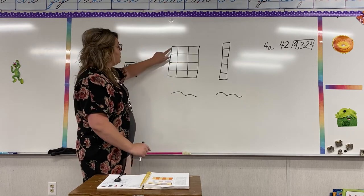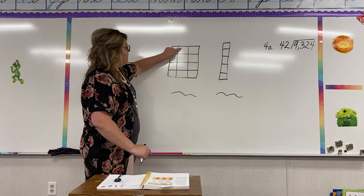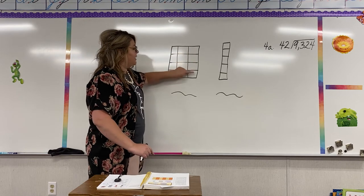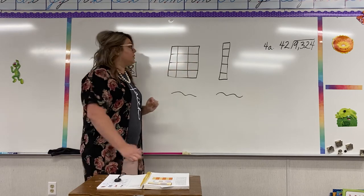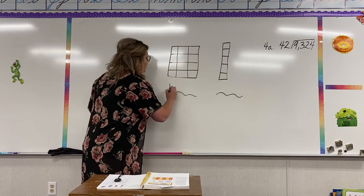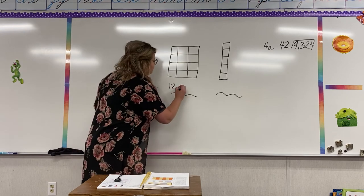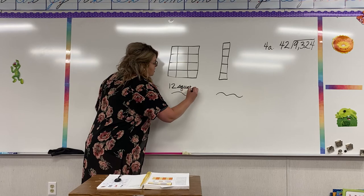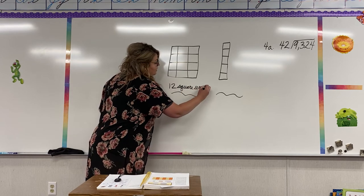If I count this up — one, two, three, four, five, six, seven, eight, nine, ten, eleven, twelve — my area would be twelve square units. You want to make sure you always put square units there also. So, twelve square units.